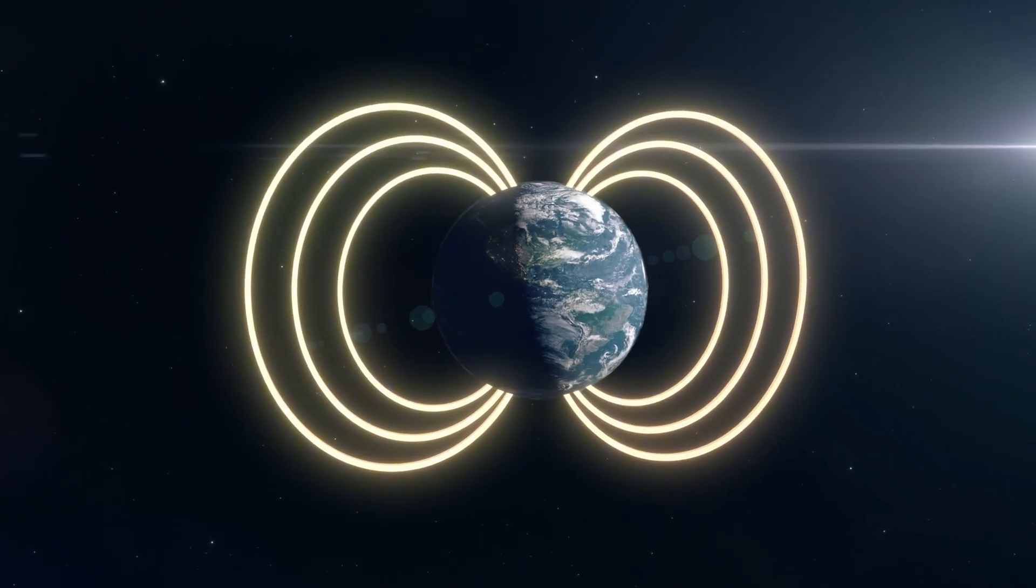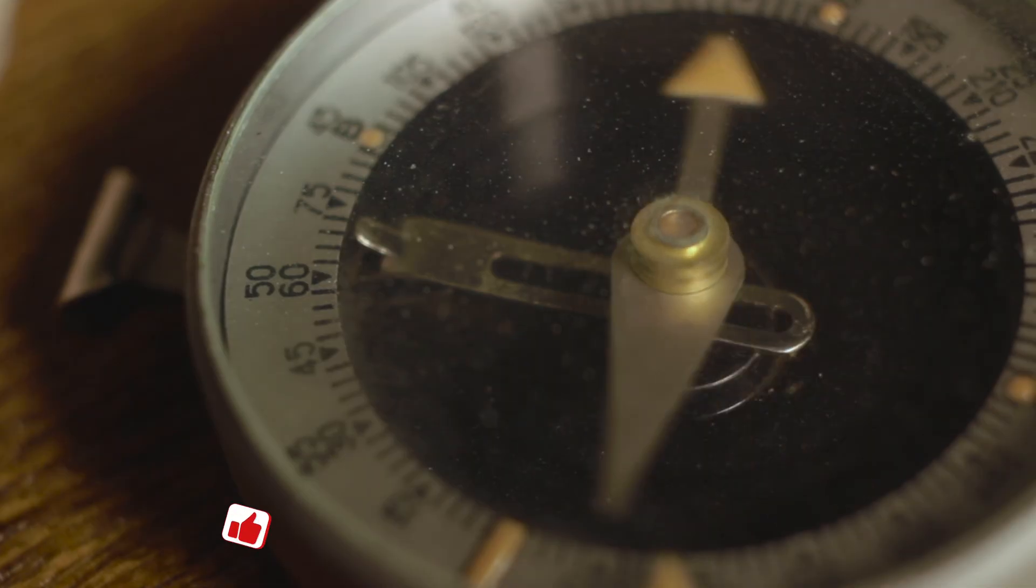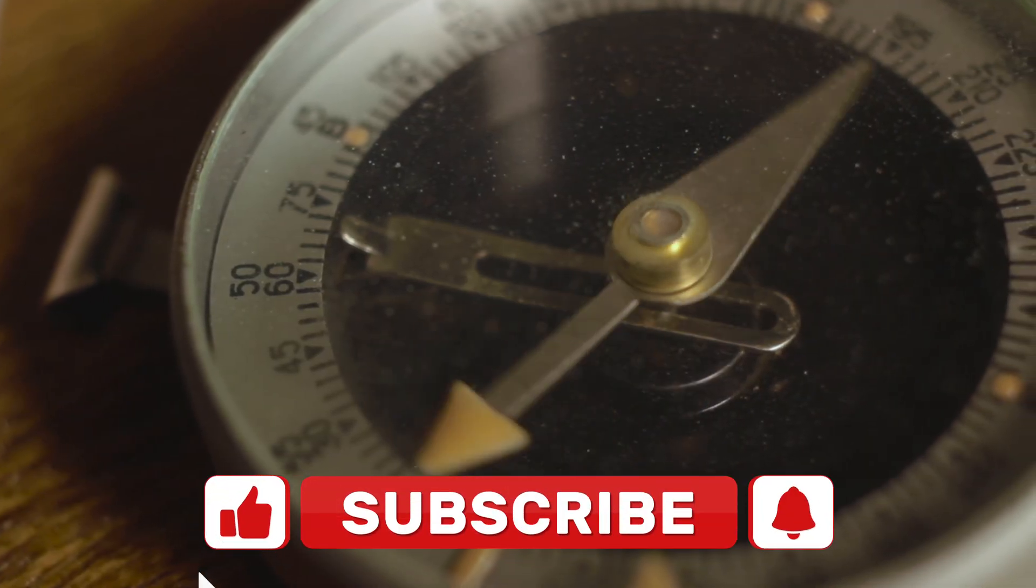So how does a compass actually work? Let's start with the basics. A compass is basically a tiny magnet that's free to rotate. That's it.